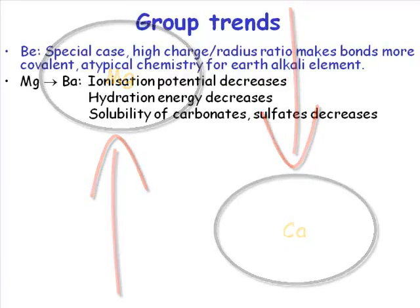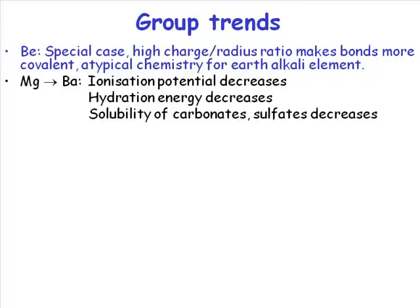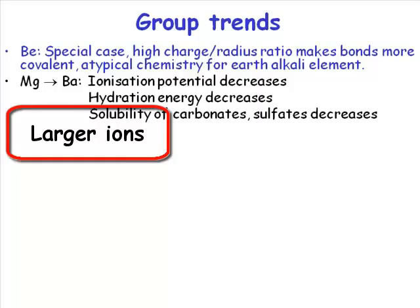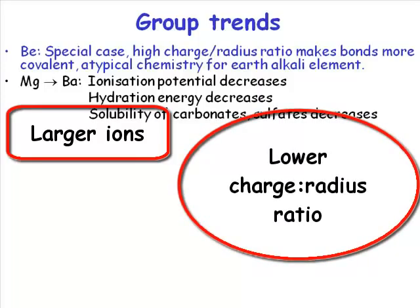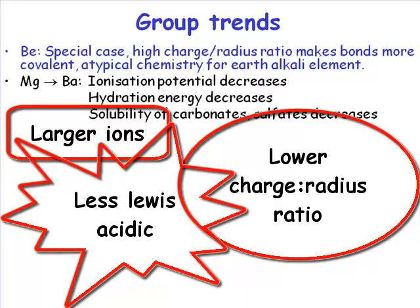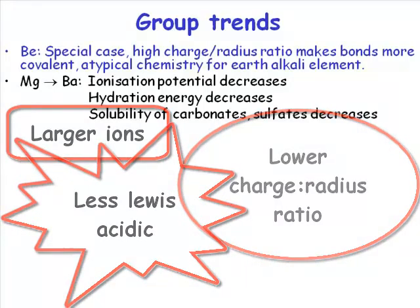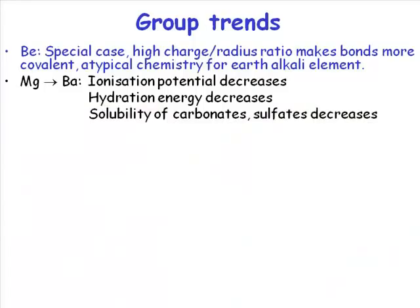If we move to the more friendly group 2 metals — magnesium through to barium — what's happening is the ionization potential is decreasing because we're moving further away from the nucleus. The hydration energy is also decreasing. Why does the hydration energy decrease as you go down the group? Because they get bigger, and because they get bigger they have a lower charge-to-radius ratio, which makes them less Lewis acidic and they bind water molecules more weakly. So the hydration energy is actually decreasing.